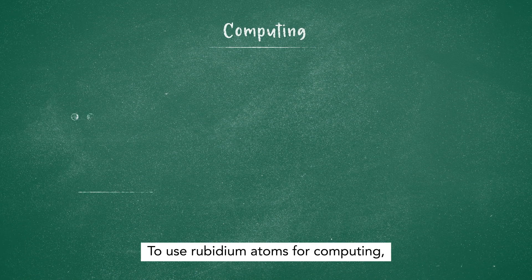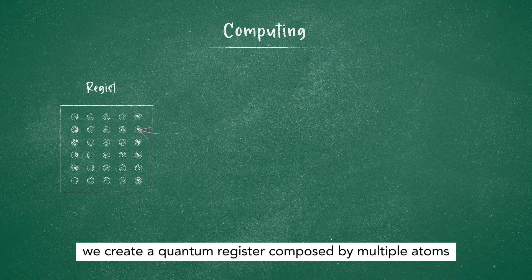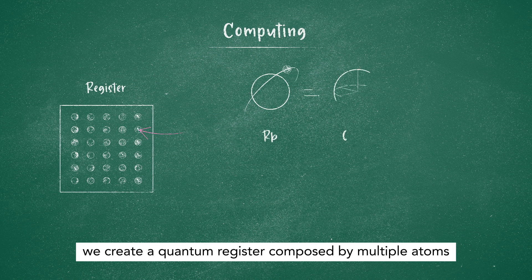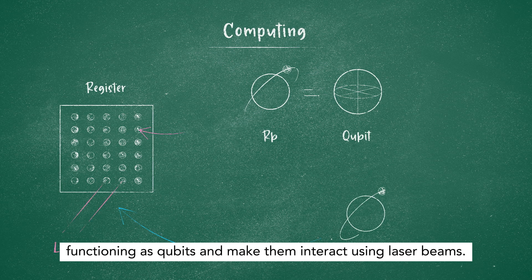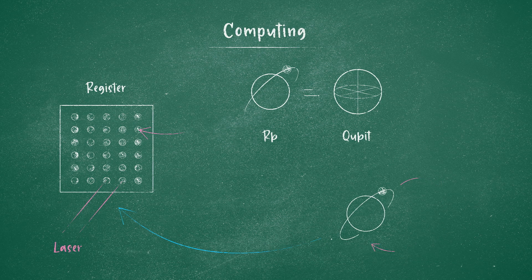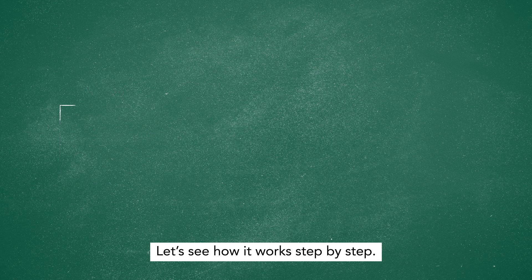To use rubidium atoms for computing, we create a quantum register composed of multiple atoms functioning as qubits and make them interact using laser beams. Let's see how it works step by step.